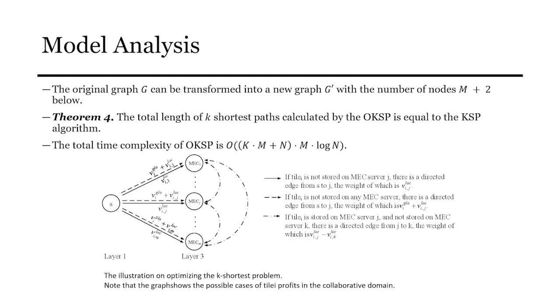After above optimizations, the tier nodes of the layer 2 are hidden, and the original graph can be transformed into a new graph with the number of nodes M plus 2. In theorem 4, we prove that the total length of K shortest paths calculated by the OKSP algorithm is equal to the KSP algorithm. The total time complexity is (K times M plus M) times M times log M.